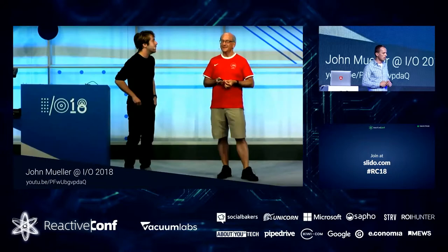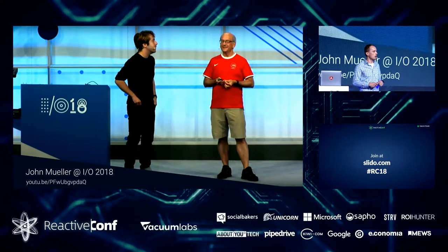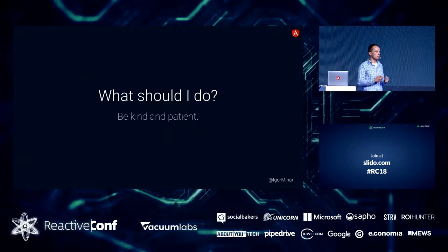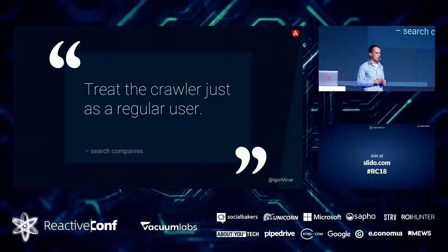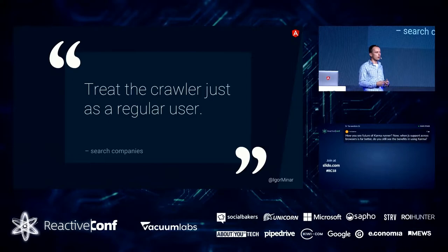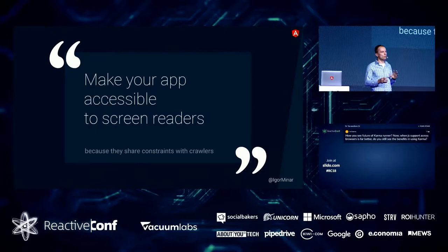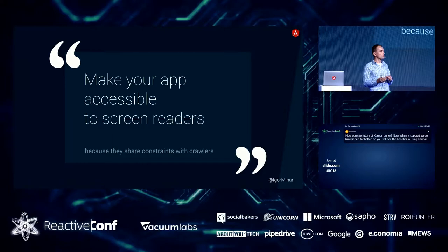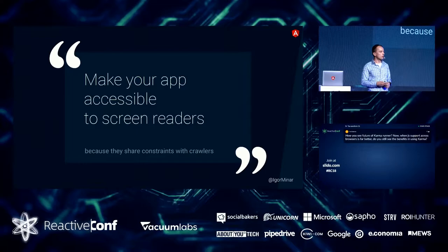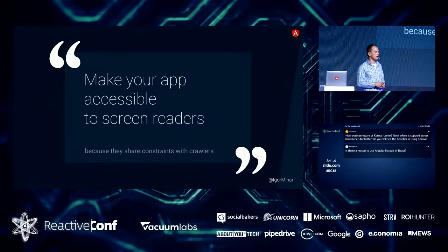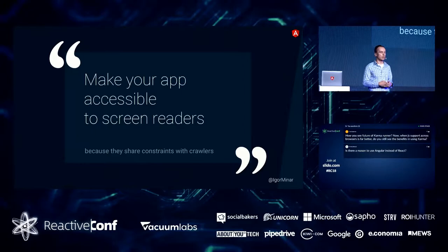This year he updated some of the information at Google I/O, so there is an additional talk I would also recommend. In general, the search companies would tell you: just treat the crawler as a regular user. Start by providing valuable content and create a great user experience. One thing I would add is to also make your application accessible to screen readers, because crawlers and screen readers often share similar constraints. If you invest in making your application accessible to screen readers, you will get double the reward — reaching users who need screen readers, but also helping search engines understand your application better.